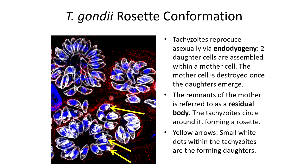Eventually this rosette conformation will get so large that the epithelial cell of the host will burst because there are just so many parasites within the cell. When this cell bursts, that's known as the lytic cycle.